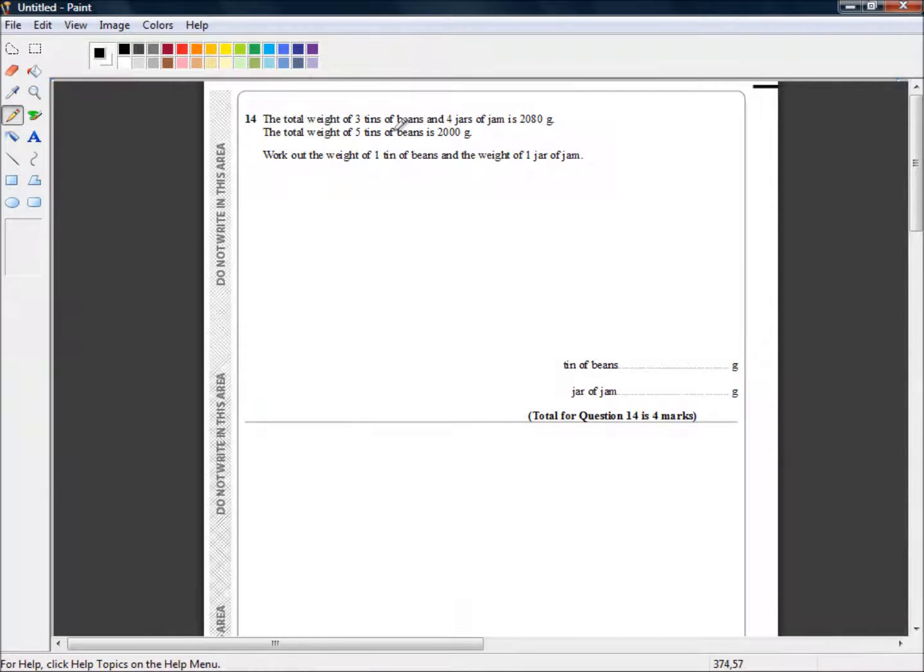Hello and welcome to the Edexcel GCSE new style grades 9 through 1. This is paper 1MA1/3F, the third paper in the foundation tier. It is a calculator paper and we're picking up at question 14.